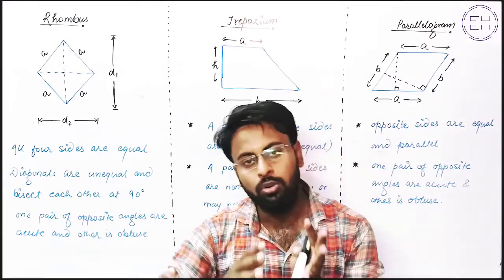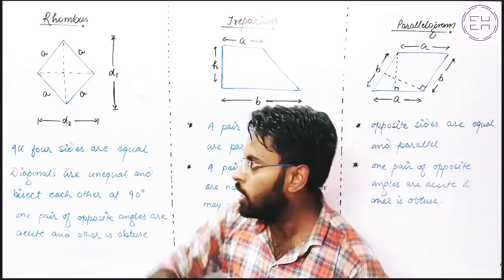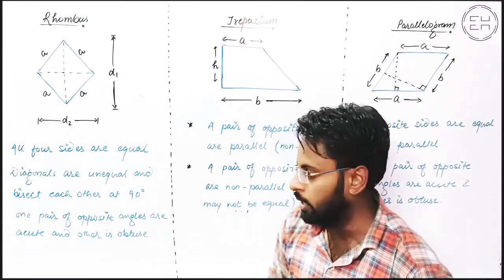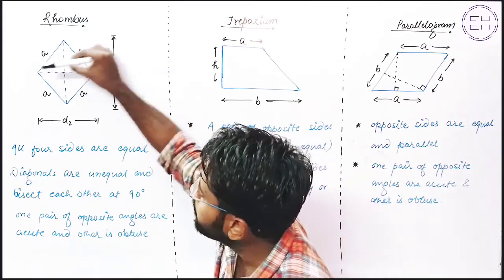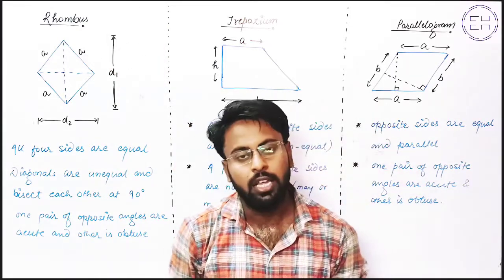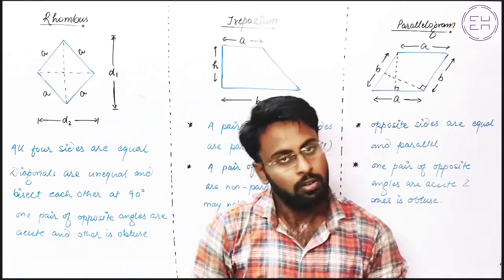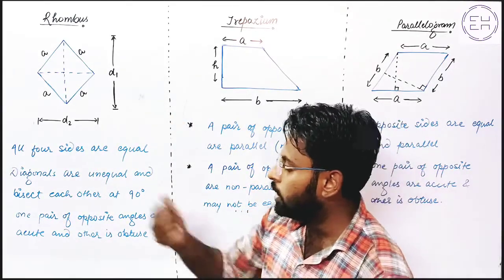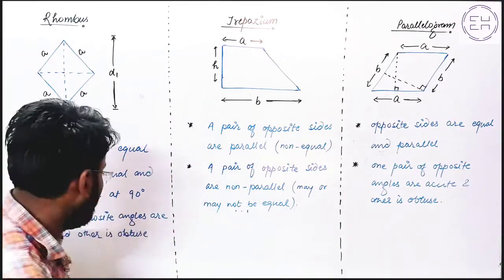This property is what differentiates Rhombus from Square. In the case of a Square, all four sides are also equal, but the diagonals are also equal there. But in the case of Rhombus, the diagonals are unequal and bisect each other at 90 degrees. The last point is: one pair of opposite angles are acute and the other pair is obtuse. This is interchangeable — one pair will be acute and the other pair will be obtuse. This is not fixed.